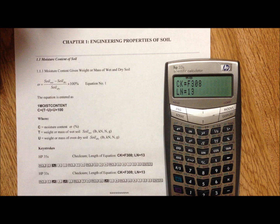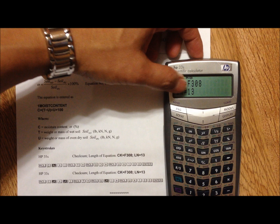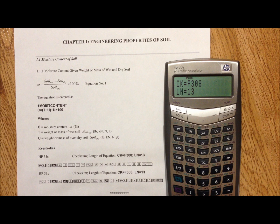It shows that the CK is F308 and LN is 13, which is exactly the same as shown here, meaning I entered the equation correctly.